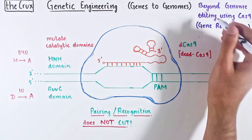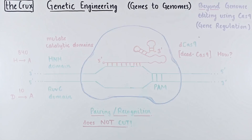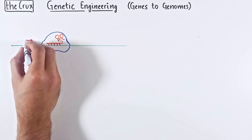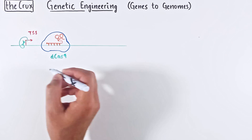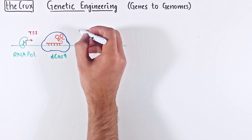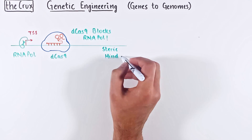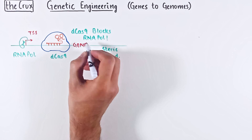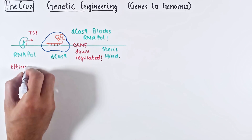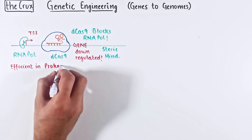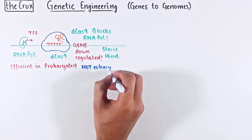So how can we take advantage of this dead enzyme? What scientists found out was that when you place a dCas9 in front of a moving RNA polymerase, the dCas9 blocks the movement of the RNA polymerase, presumably by simply acting like a roadblock. As a result, the underlying gene is effectively down-regulated. This is pretty efficient in prokaryotes, but unfortunately it does not work in eukaryotes.